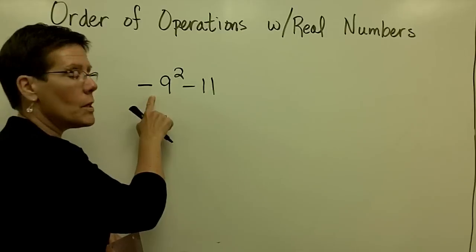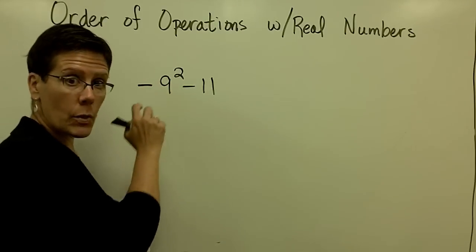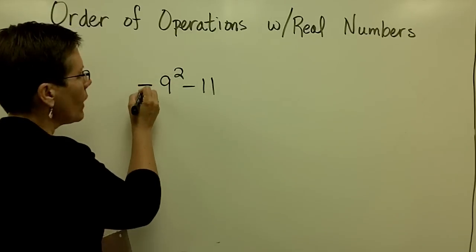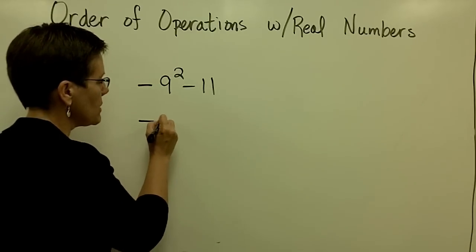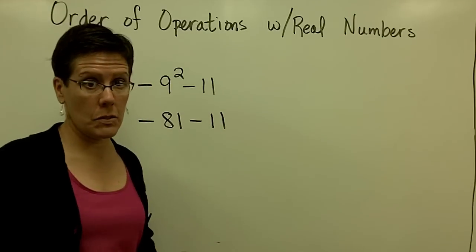We just did a problem where I asked you to take the opposite of something squared. 9 squared is 81. So I would like you to take the opposite of 81 and then subtract 11 in this problem.